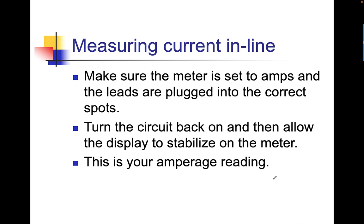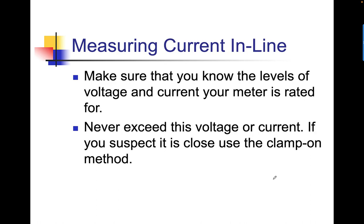It's very important that you make sure you do not overload your meter. Double-check your meter manual to see how many amps and what voltages your meter can handle. You don't want to put 20 amps through your meter — it will make your meter sort of explode. Make sure you know the levels of voltage and current your meter is rated for. Never exceed this voltage or current. If you suspect that it's close, use the clamp-on method.